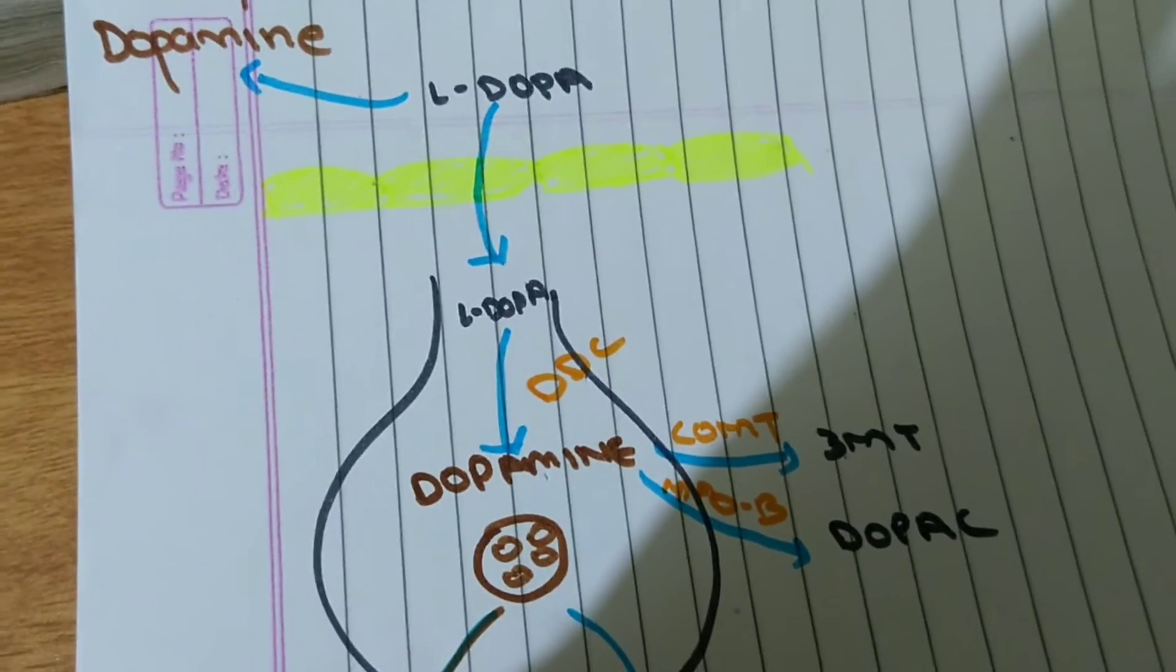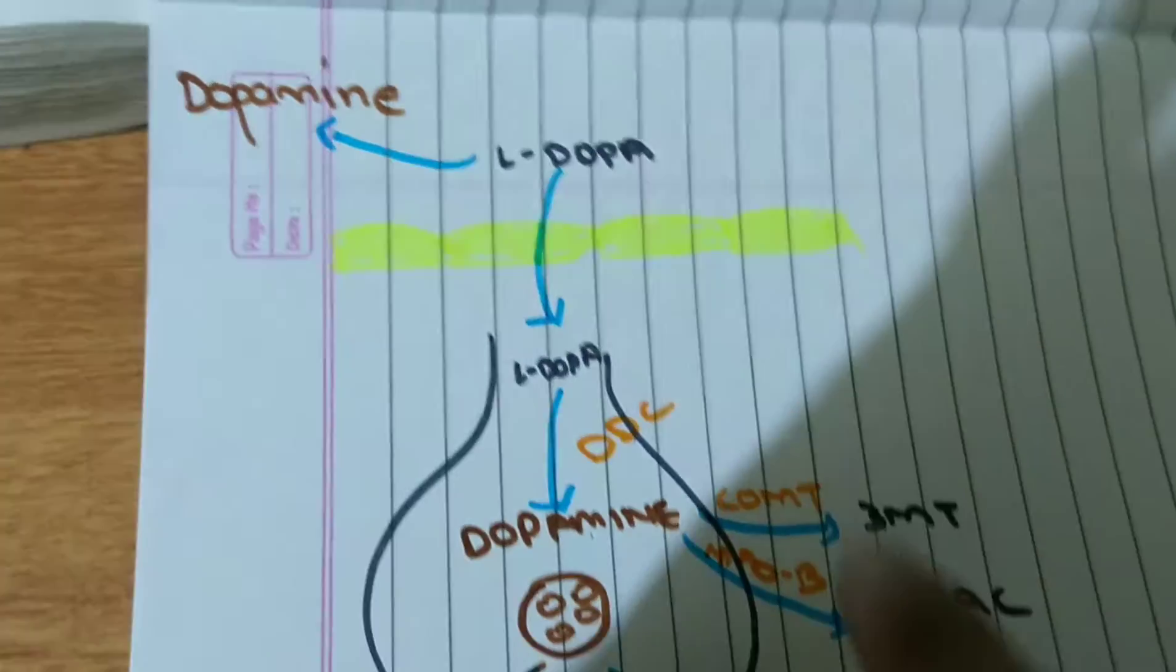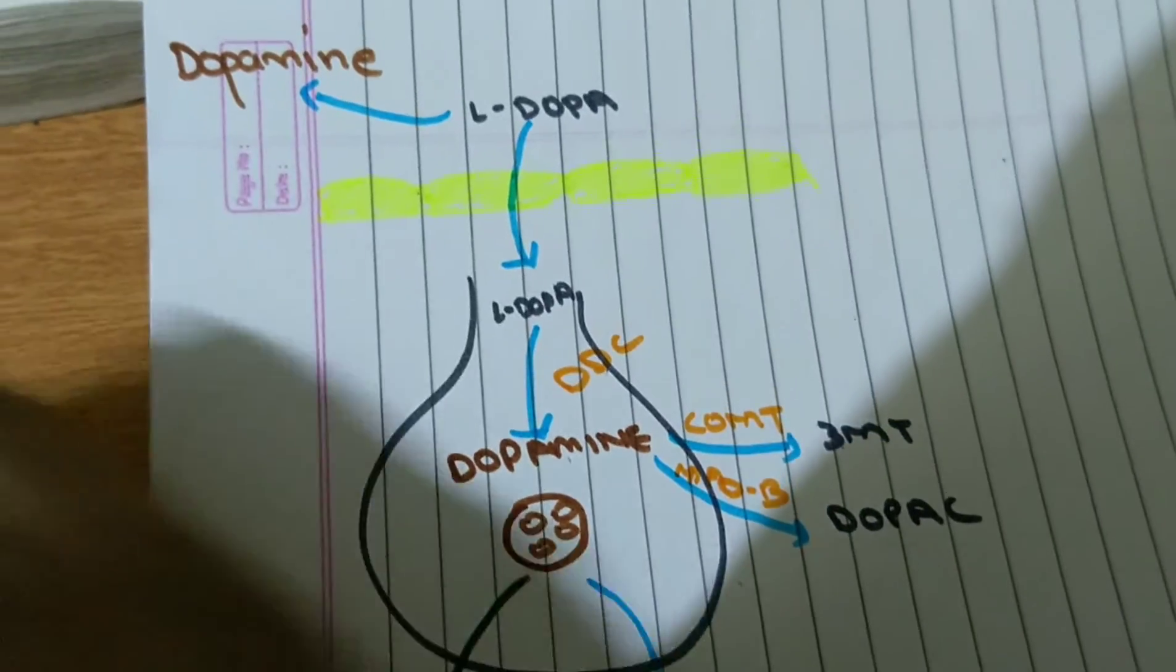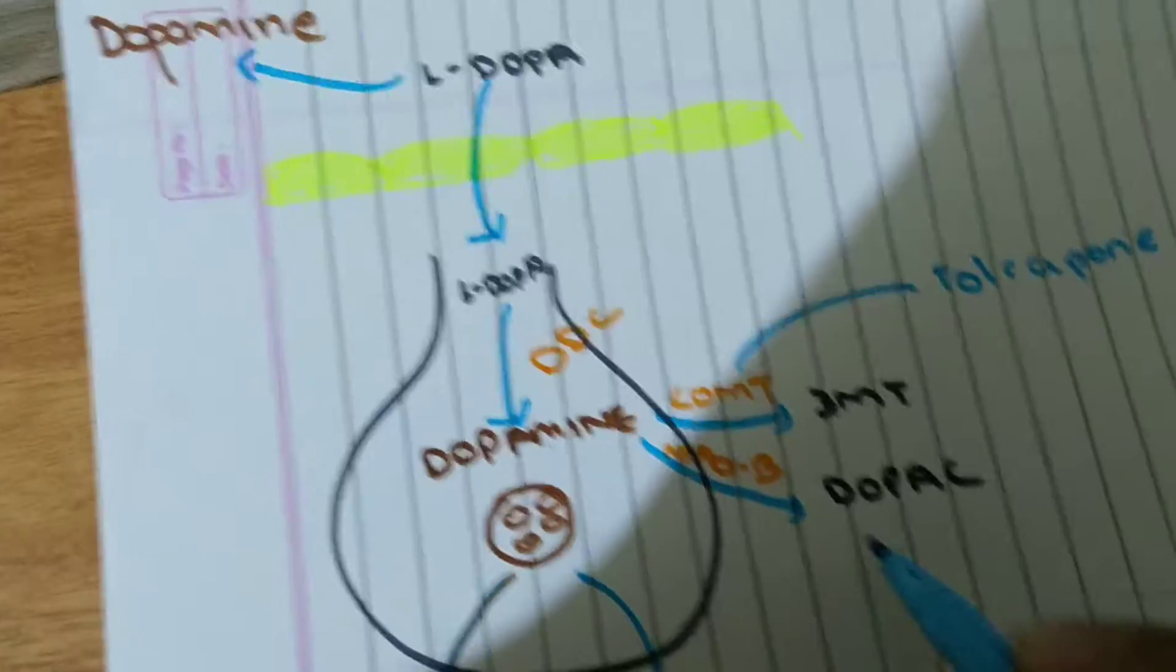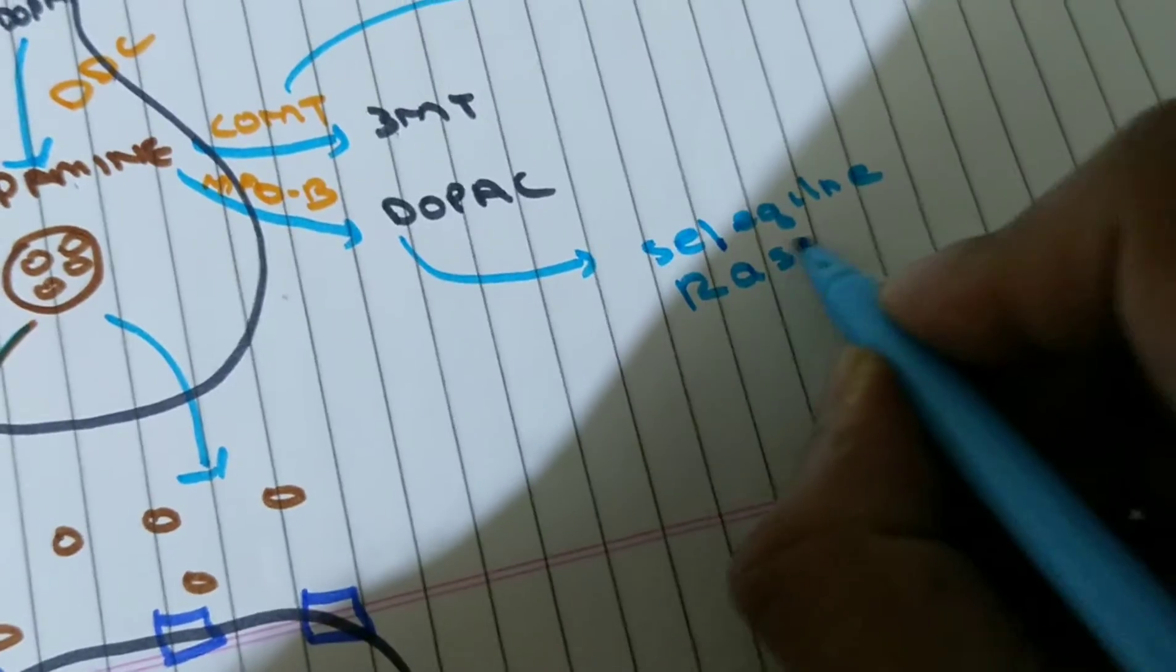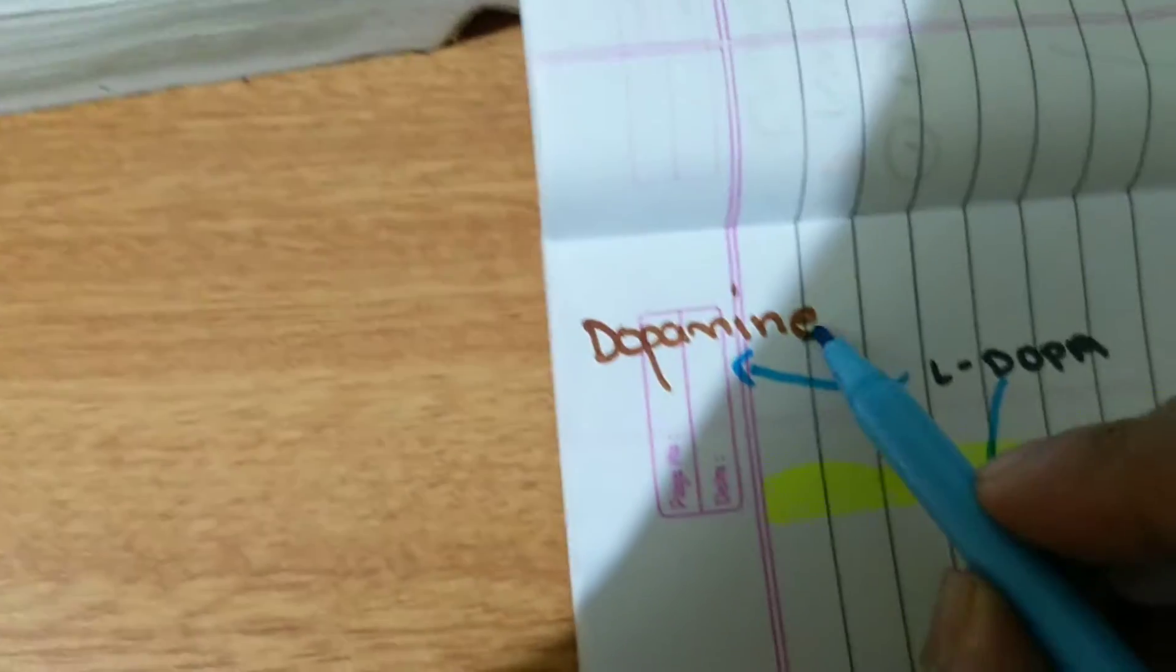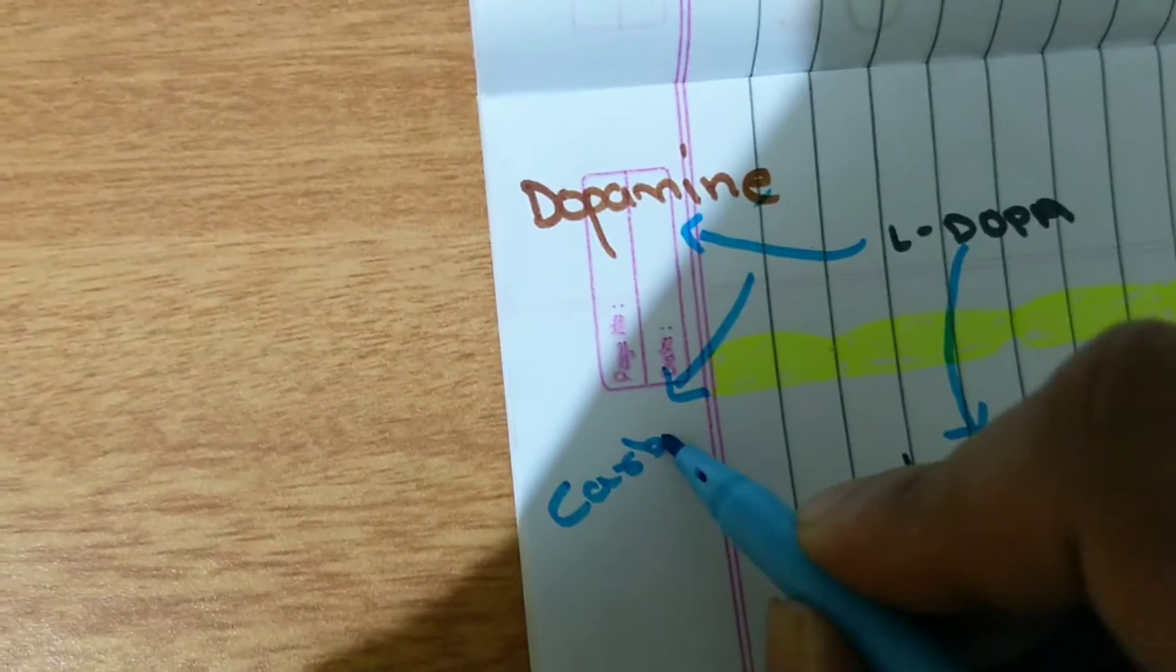Already dopamine is very low in Parkinson's disease. So we don't want this L-DOPA to become dopamine in circulation or dopamine becoming 3-MT or DOPAC. So we can use COMT inhibitors such as Tolcapone or MAO-B inhibitors such as Selegiline or Rasagiline.